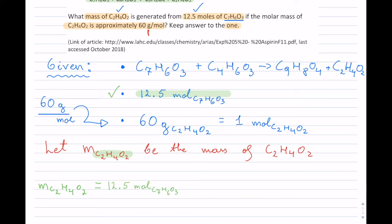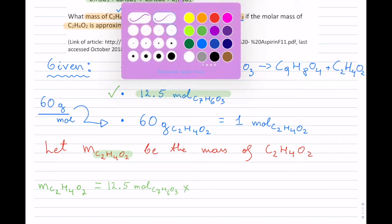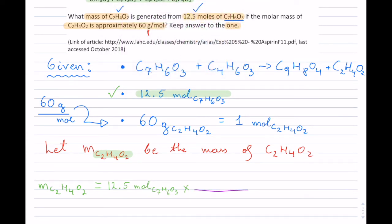So now I'm going to use the other givens. So I'm going to multiply, and I want to get rid of these moles of C₇H₆O₃. So how do I get rid of it? Well, I can get rid of it by placing them in the denominator, because then they will cancel each other off. So this will cancel the one on the numerator.